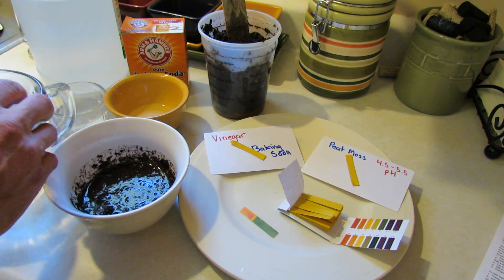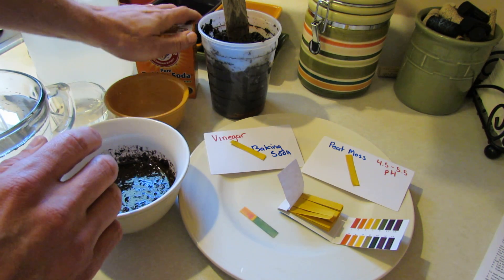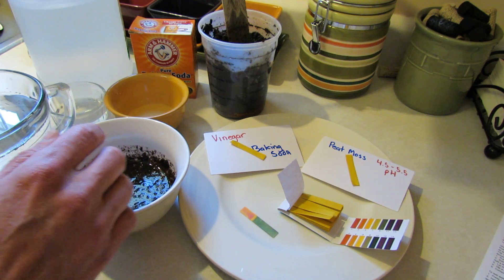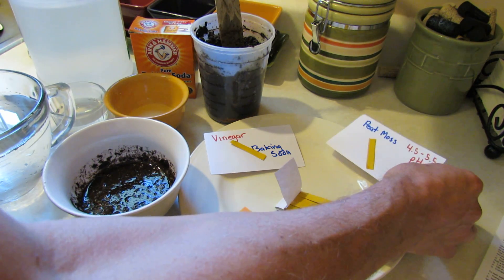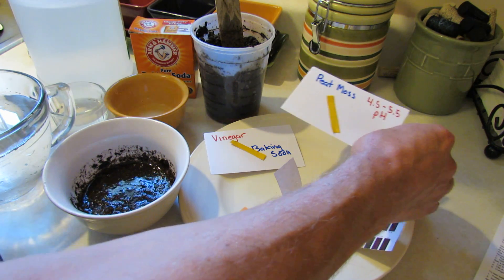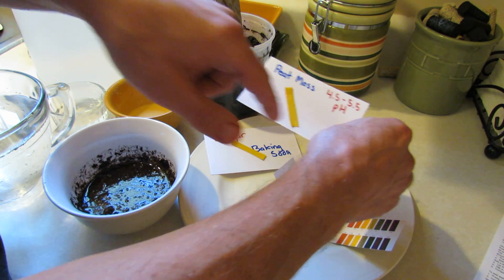I have set up here just plain white vinegar, baking soda. Baking soda is alkaline, vinegar is acidic and I also have my peat moss that I've been doing meter testing with. The pH for peat moss is about 4.5 to 5.5.